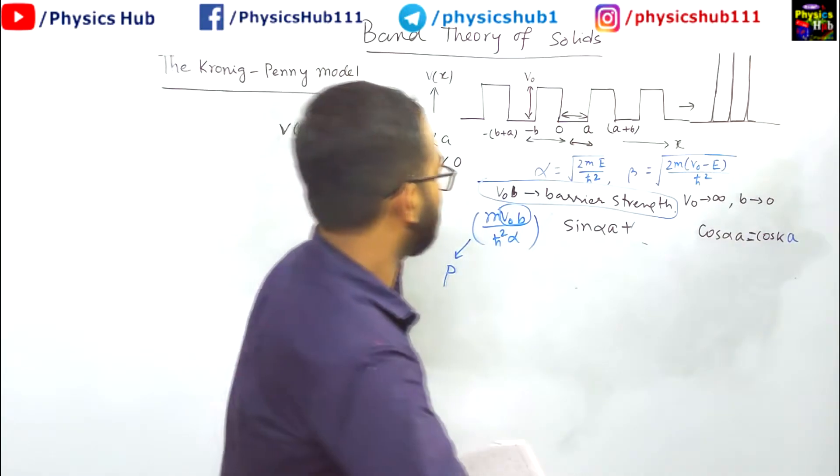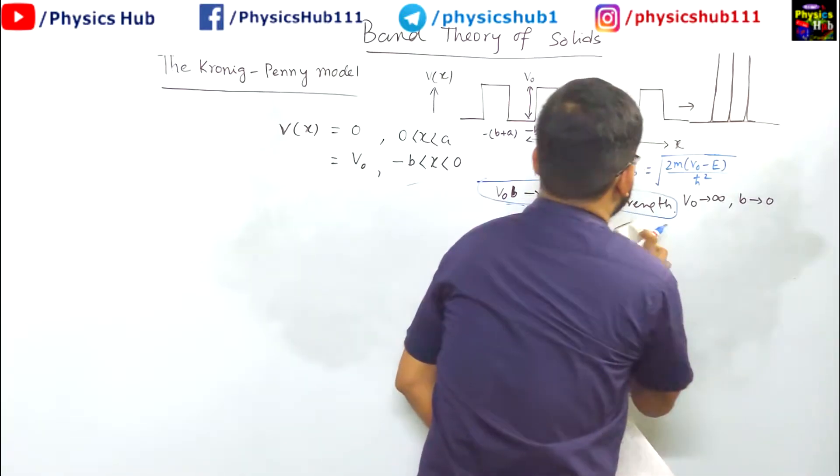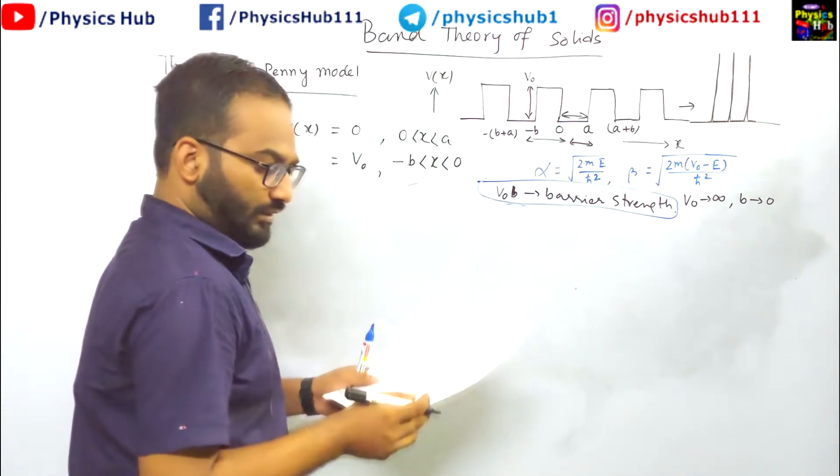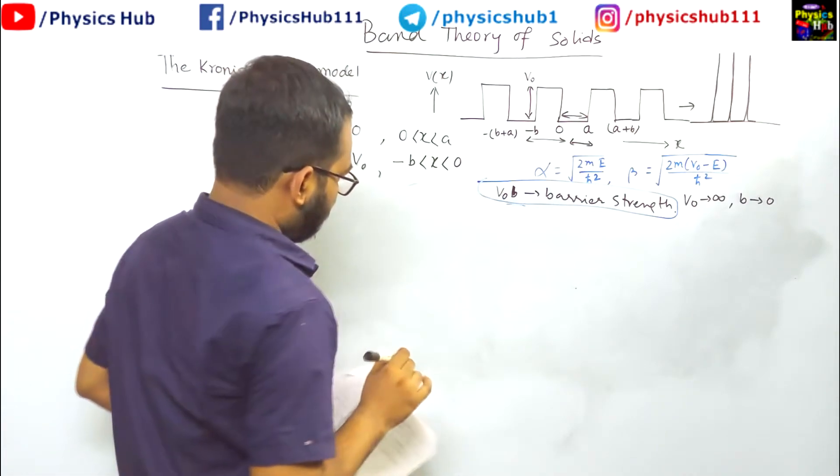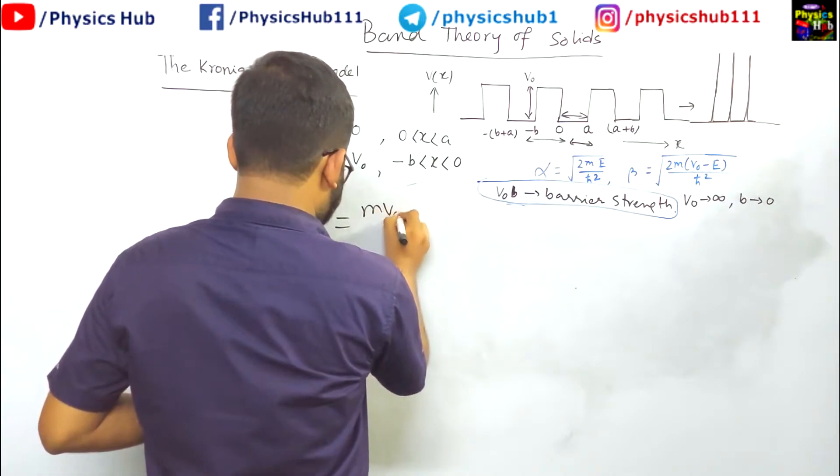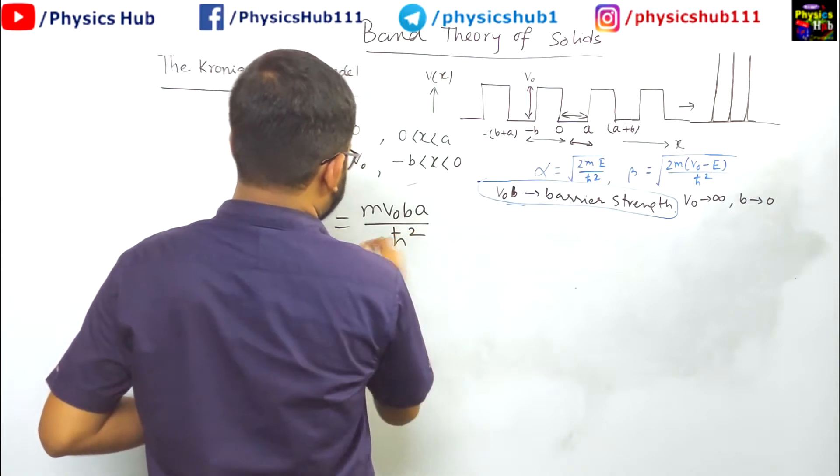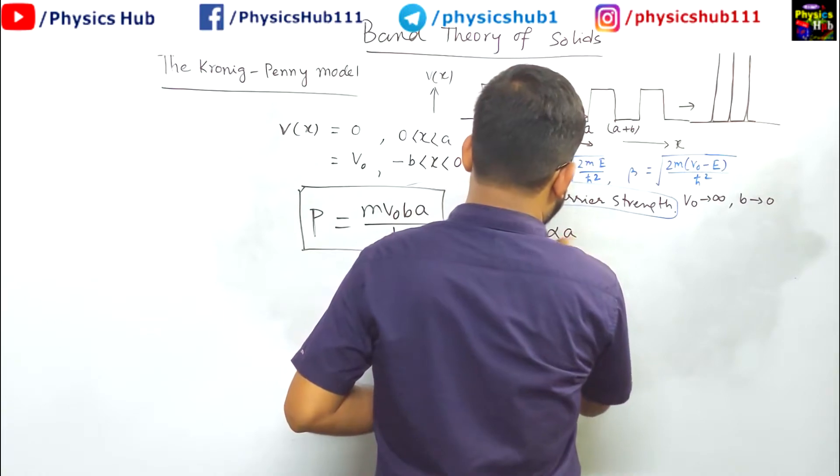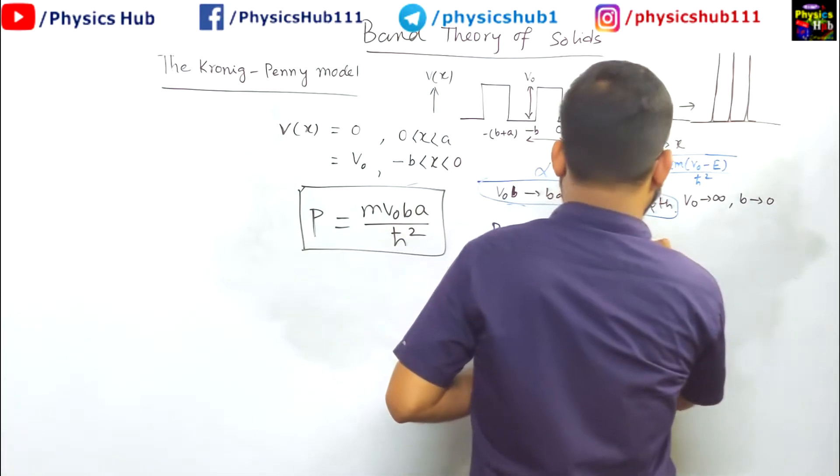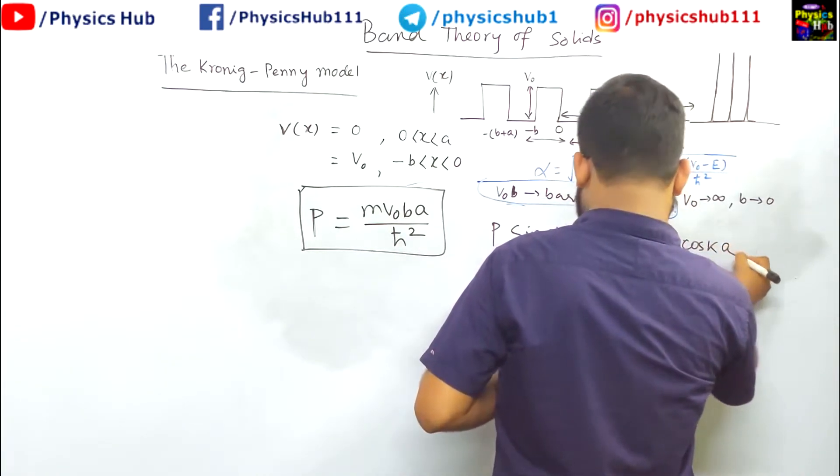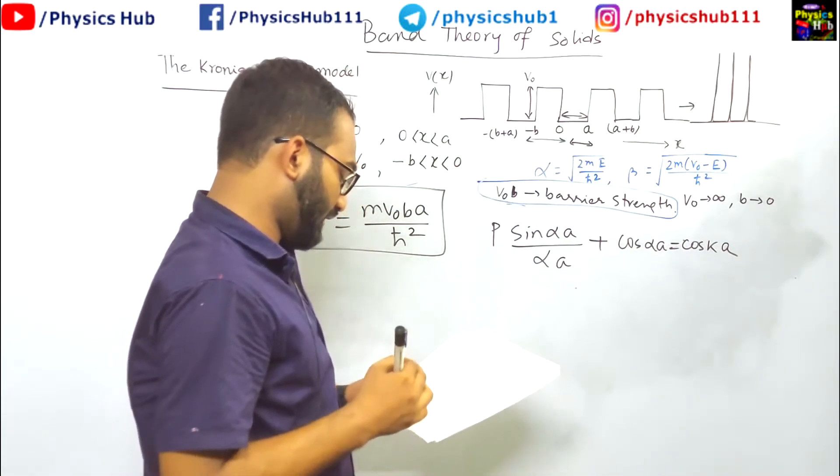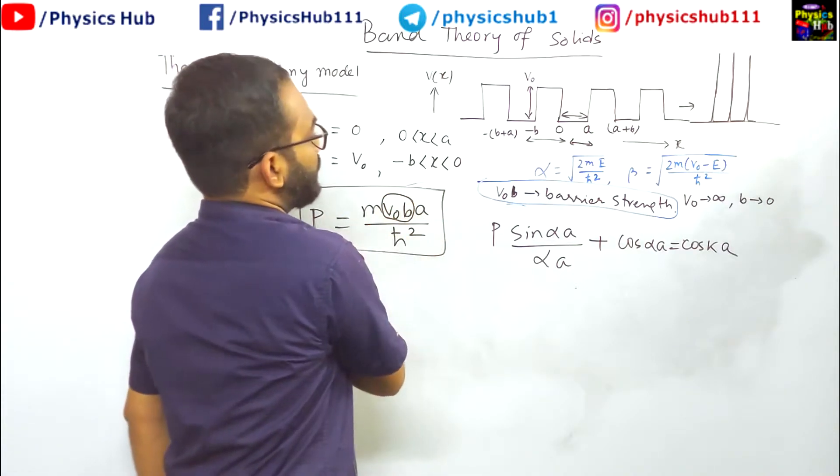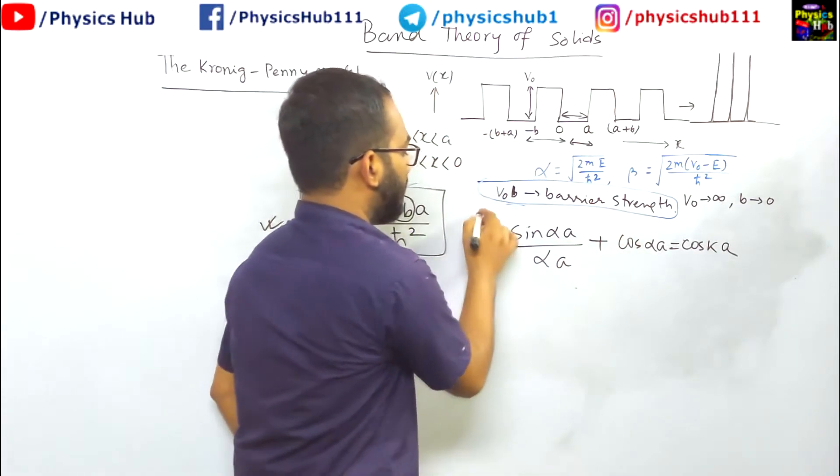After doing this modification, we are getting ultimately - I am just writing it freshly so that there is no confusion to us because we are now going to plot it. P is defined in this way: p equals m v naught b a by h cut square. Just correct it if I have written it incorrectly. Ultimately you will get the equation like this: p sin alpha a divided by alpha a plus cos alpha a equals cos k a. This is the ultimate equation we are getting.